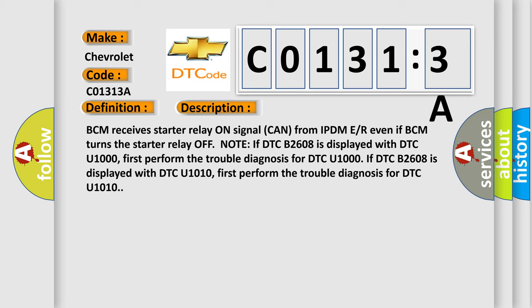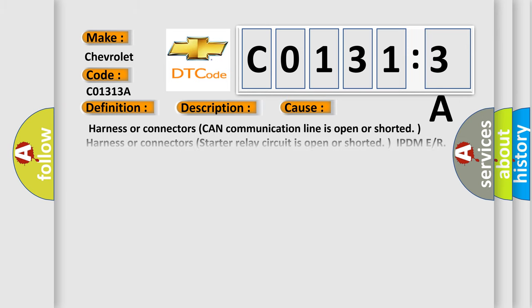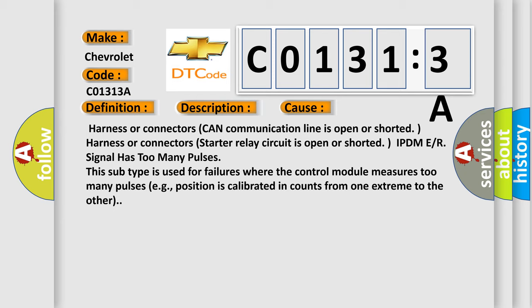This diagnostic error occurs most often in these cases: Harness or connectors CAN communication line is open or shorted. Harness or connectors starter relay circuit is open or shorted. IPDM E/R signal has too many pulses. This subtype is used for failures where the control module measures too many pulses, e.g., position is calibrated in counts from one extreme to the other.